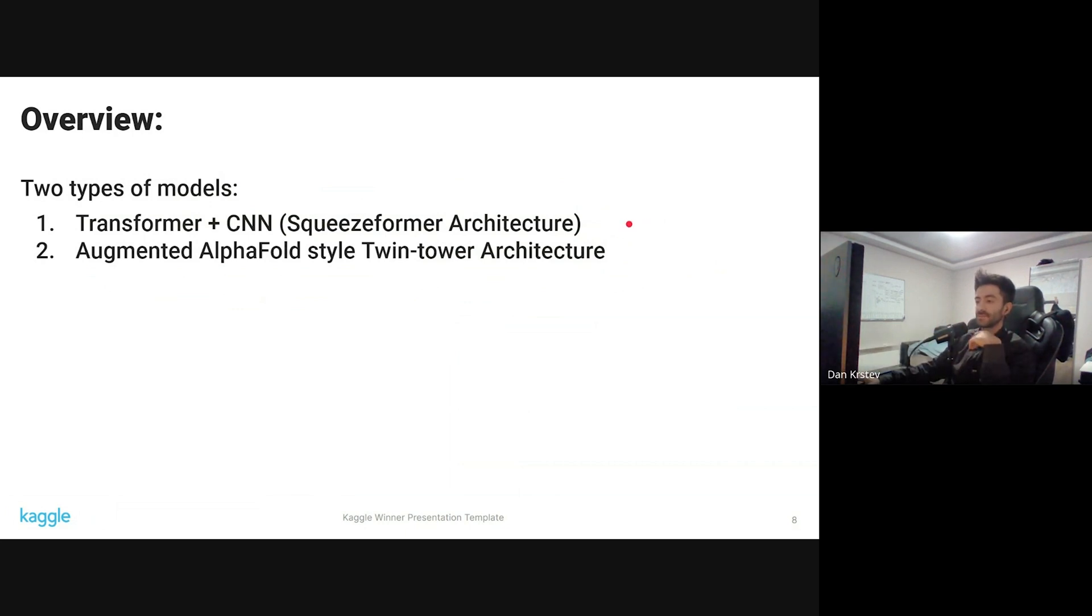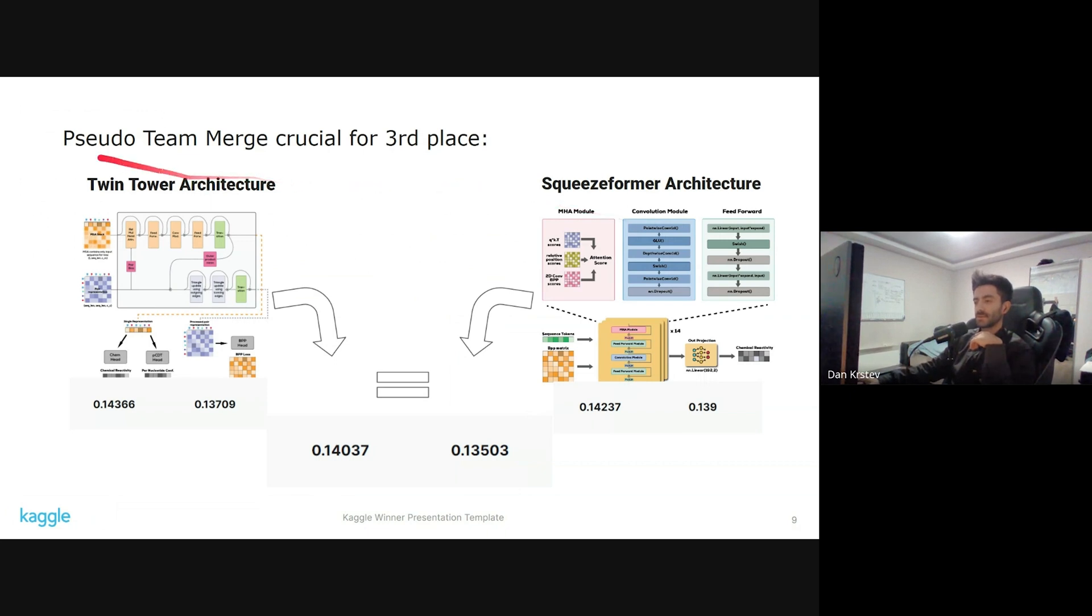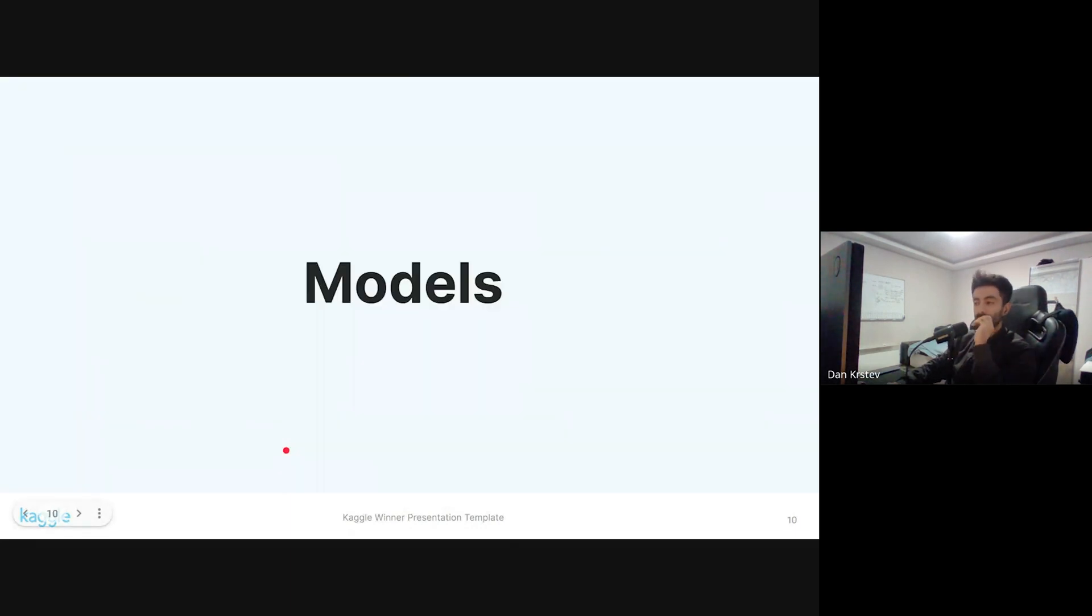But fortunately, it helped having two different models. As we can see, the Squeezeformer architecture, this is a single model, performed 0.14237 on the private, and the twin tower architecture performed 0.14366 on the private. But when they were combined, I think this was 8th place on the private and this was somewhere around 12th, but the combination of them proved crucial for the third place.